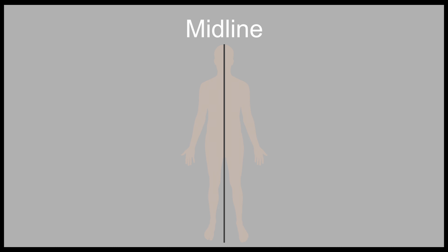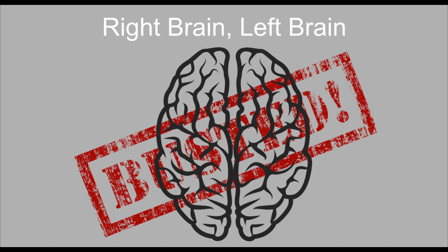Think about a child sitting with legs crossed, or drawing a straight horizontal line across the paper, or even completing a puzzle. The development of this skill helps us write, play sports, and do something as simple as put on our shoes. And identifying as right-brained or left-brained? That's a myth.